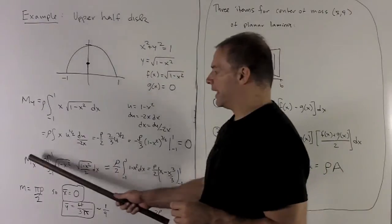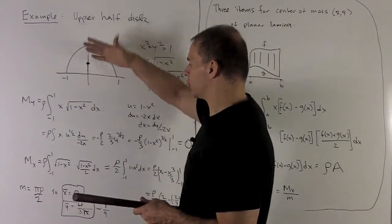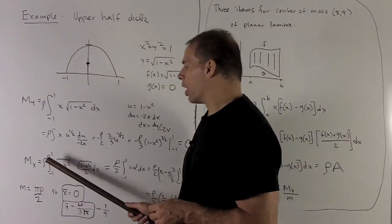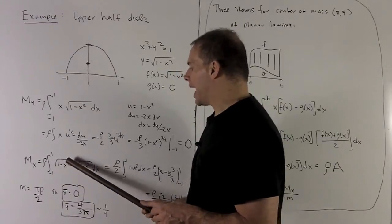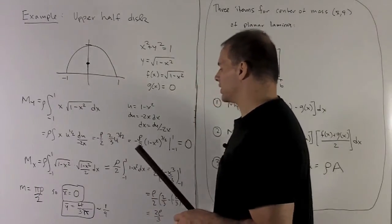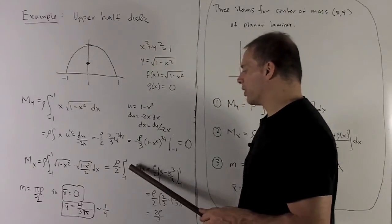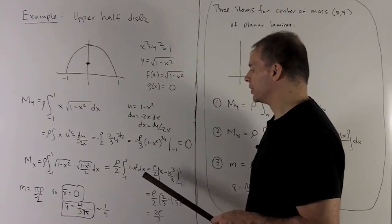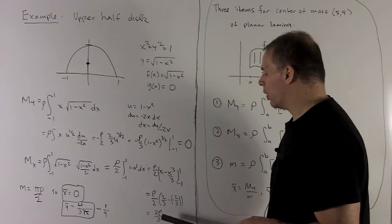Moment in the x-axis. We expect something interesting here because we don't have this symmetry in this direction. Formula says take rho, definite integral from minus 1 to 1, top minus bottom, top plus bottom over 2. This is nice because the radical is going to disappear. I can bring the 2 out in front. Then I'm taking the antiderivative of 1 minus x squared, put in minus 1 and 1, and take the difference. So we follow that through, and that's going to leave me with 2 rho over 3.